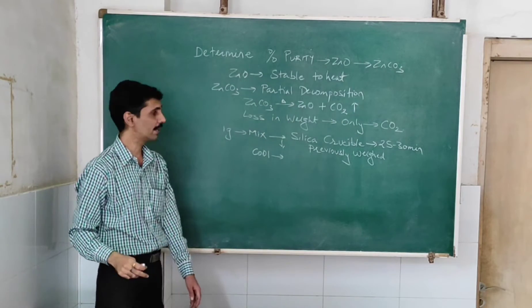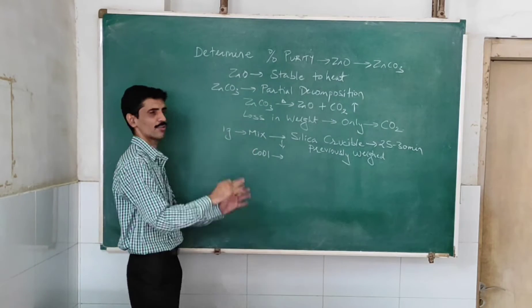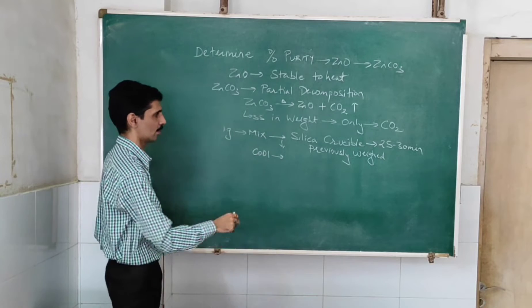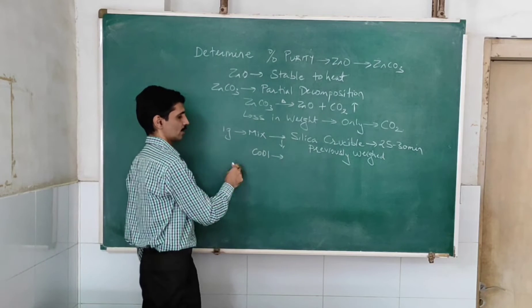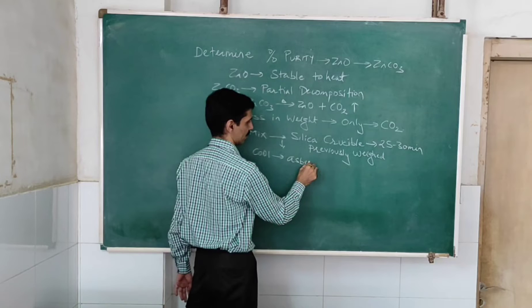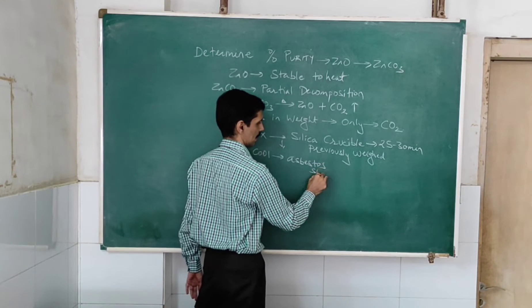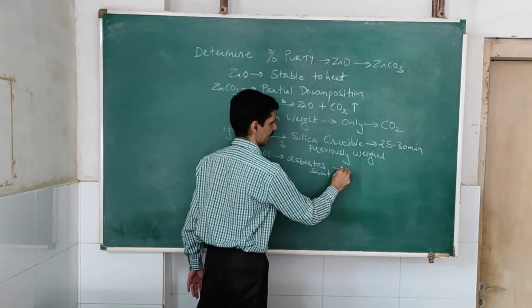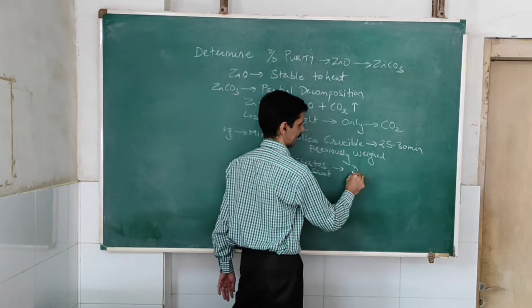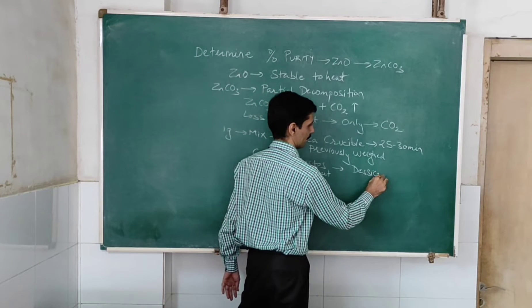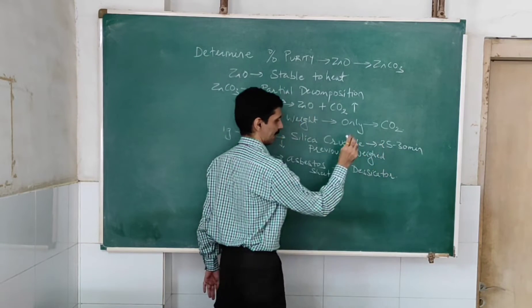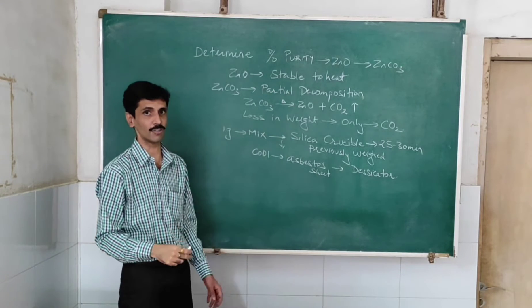Now, once the heating is done, once we are very sure that the carbon dioxide is removed for this duration, we need to cool it first of all in asbestos sheet, and then we are going to make use of a desiccator.